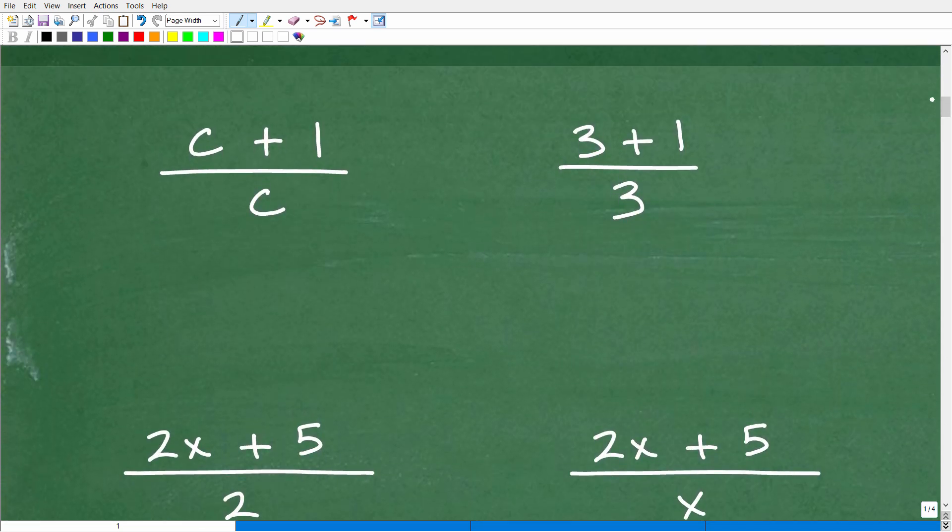Okay, so the best way to kind of understand this situation is here we have our c plus 1 over c. So, c is just a number. Remember, a variable in algebra just represents a number. So, here we have a number plus 1 over that same number. So, let's take a look at a situation where we have a number, but this time we're going to make that number actually something we can recognize. So, like 3 plus 1 over 3. So, if I gave you this expression, 3 plus 1 over 3, and we wanted to simplify this, we would say, okay, 3 plus 1 is what? Well, that is 4, and we have 4 over 3. So, that would be the fraction, 4 thirds, no problem.